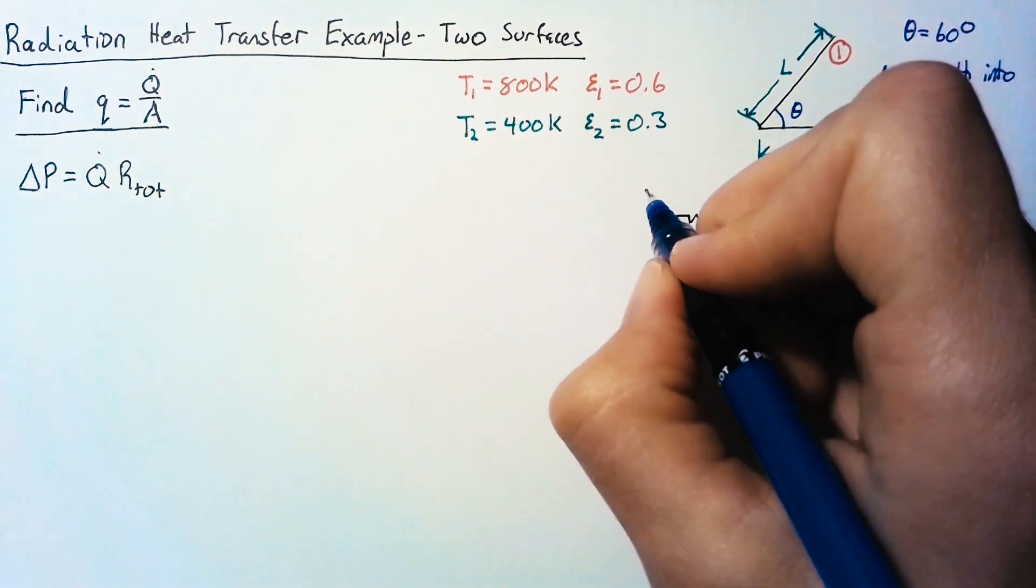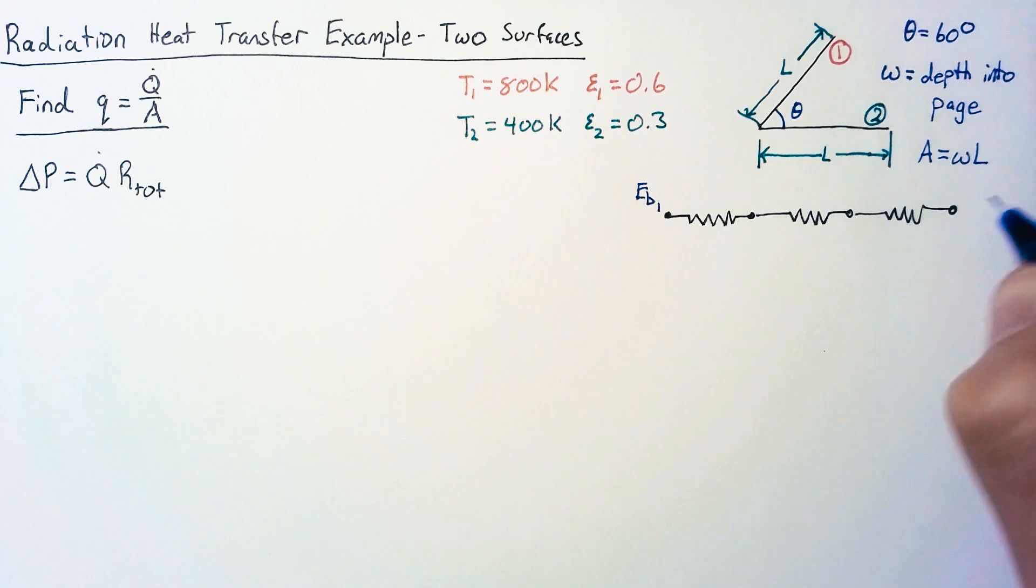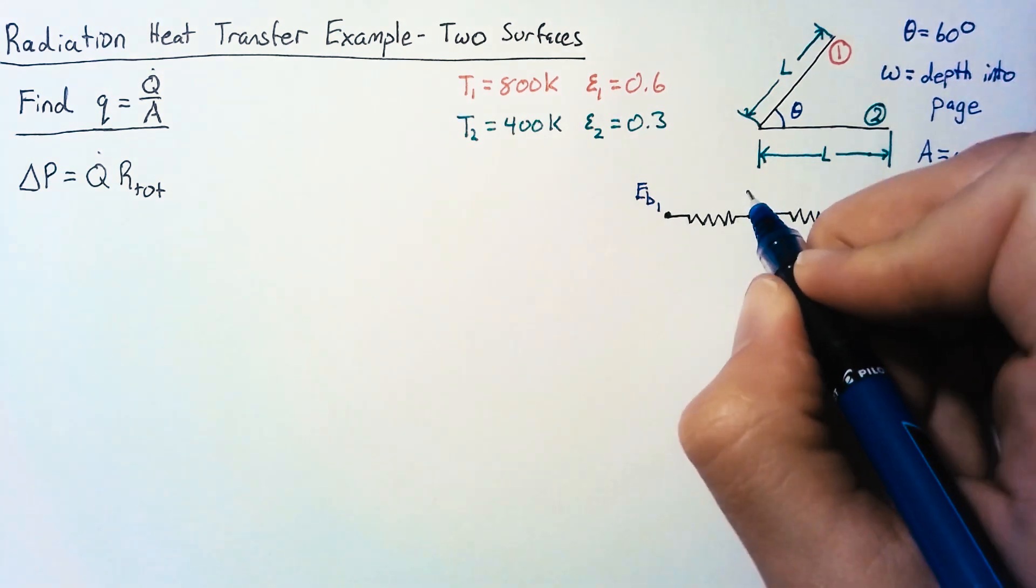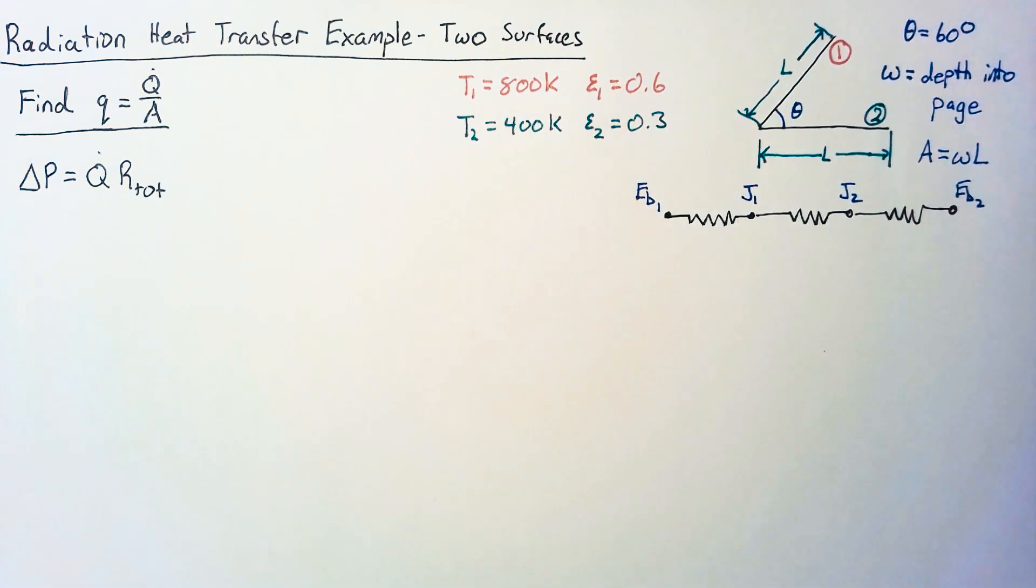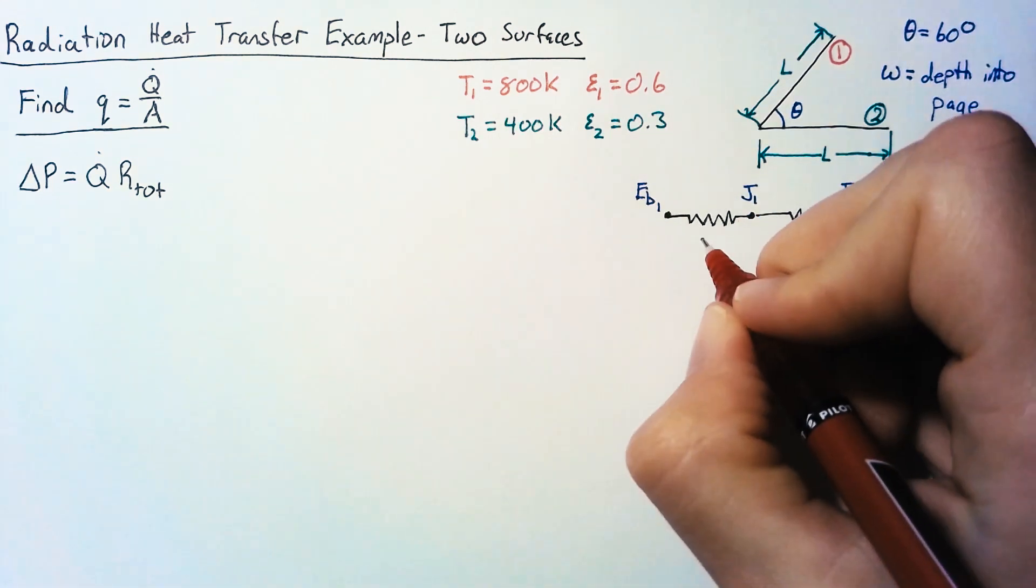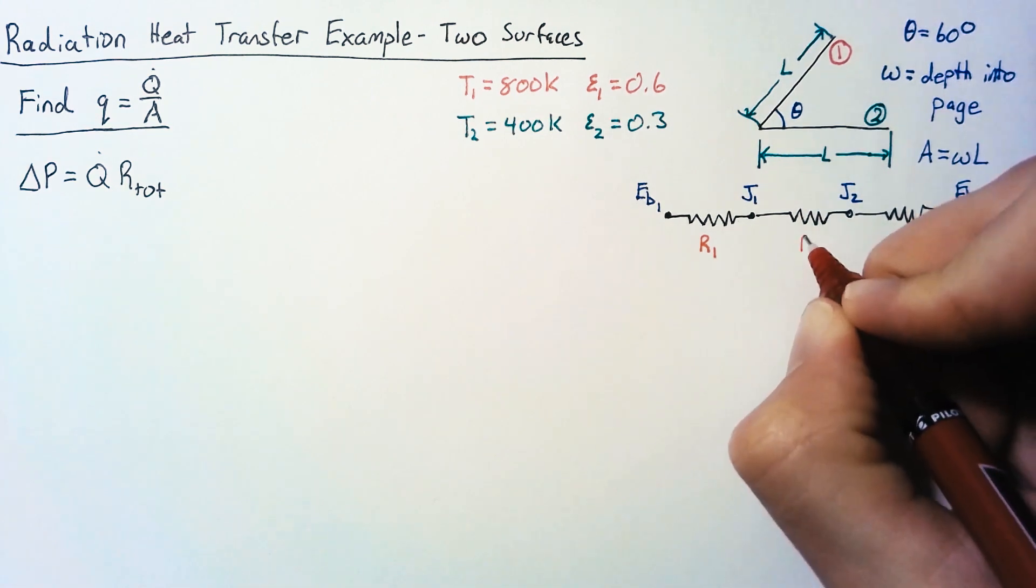On the left here, we're going to have the blackbody radiation of surface 1. And on the right, we're going to have the blackbody radiation of surface 2. And then these two points in the middle are just the radiosities of our two surfaces. In previous videos, we called these resistors R1, R2, and R12.